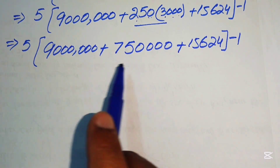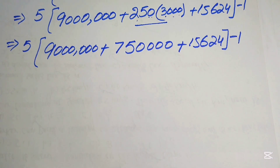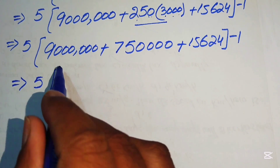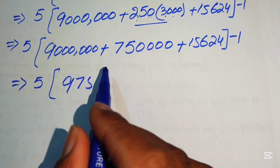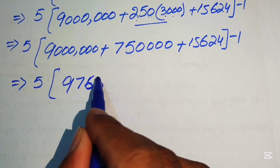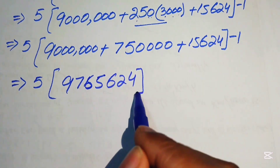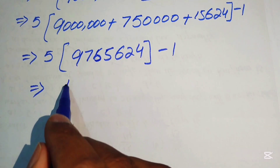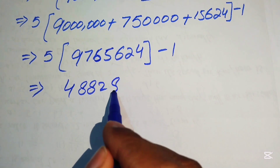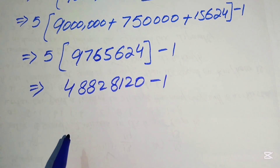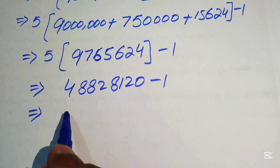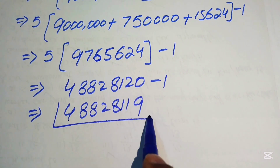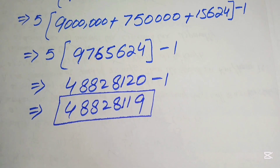Multiplying 9,765,624 by 5 gives 48,828,120. Subtracting 1 gives a final result of 48,828,119. This is the final simplified form of the given algebraic expression.